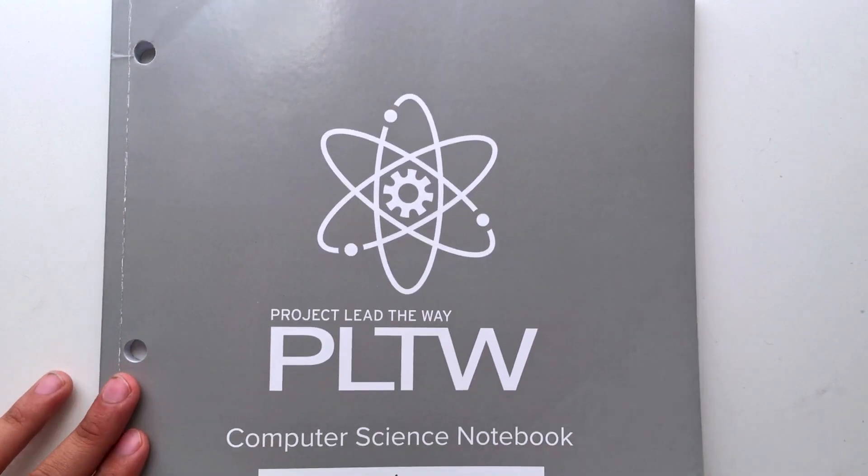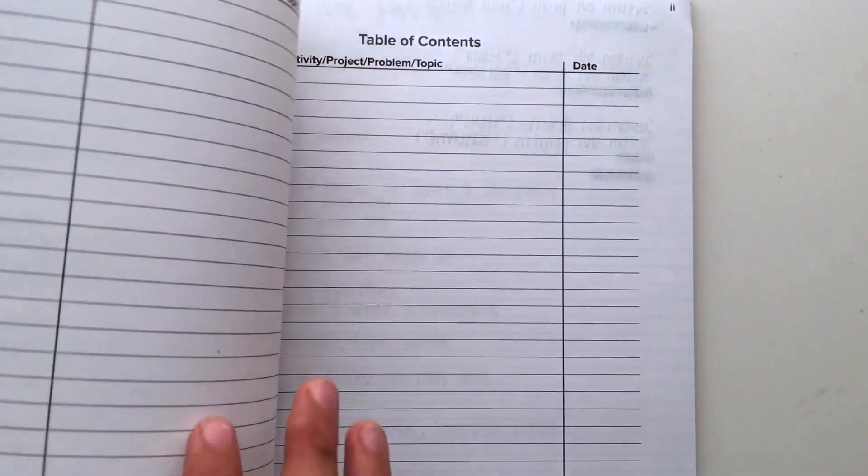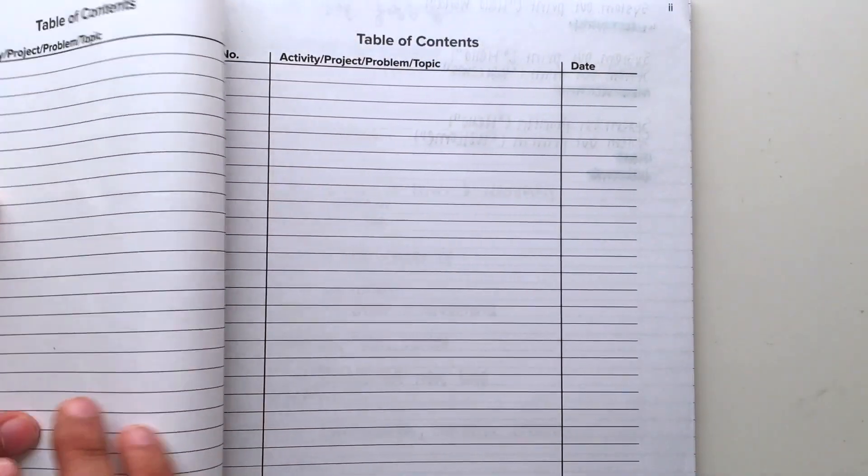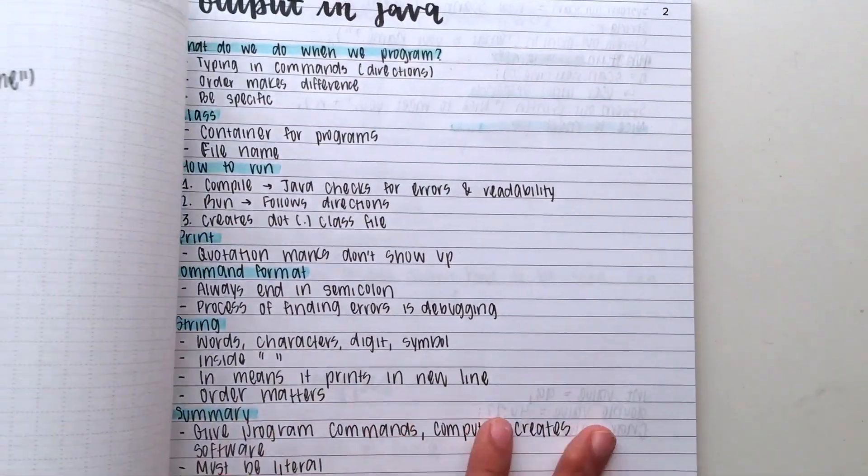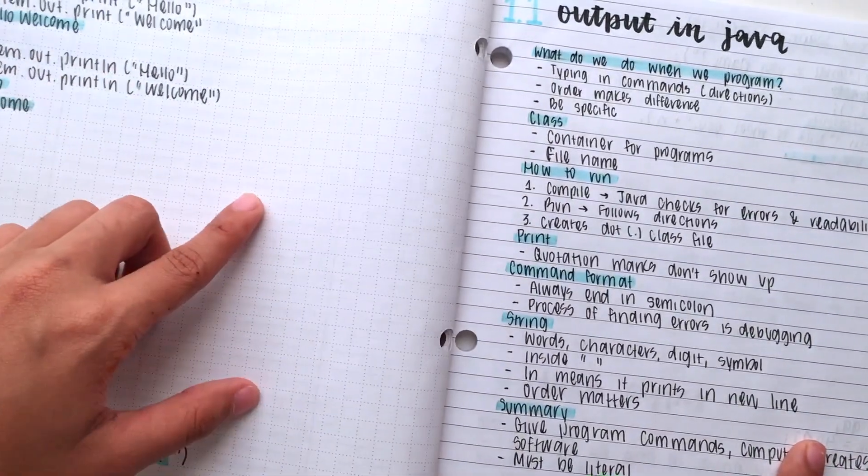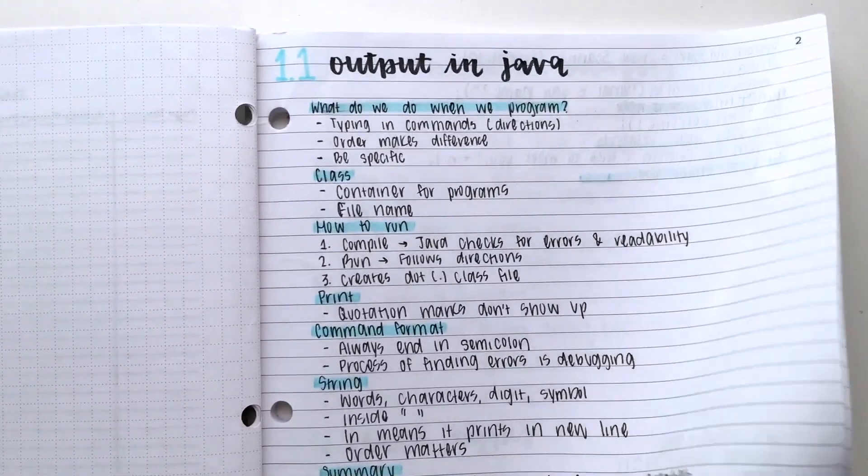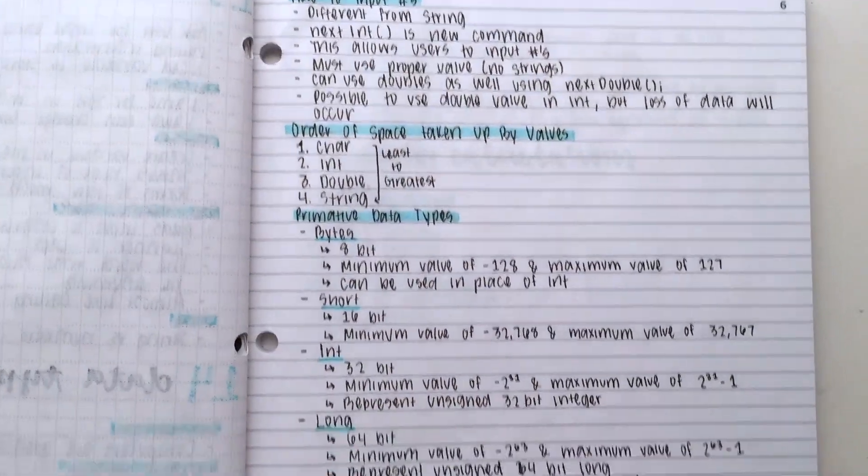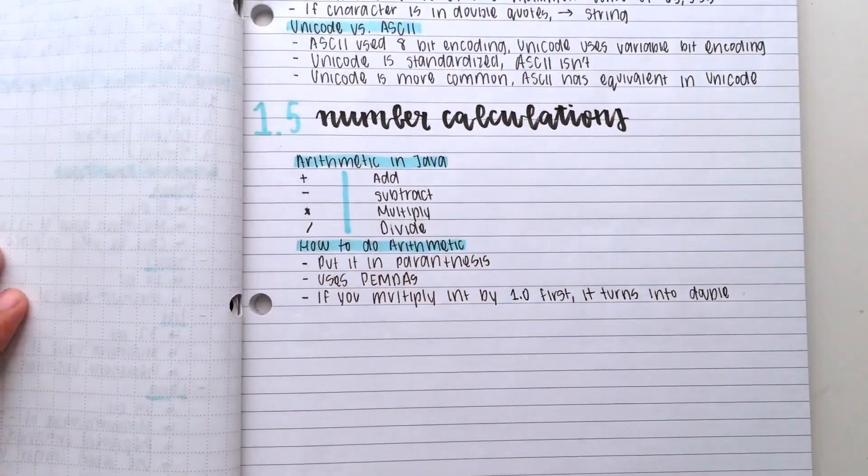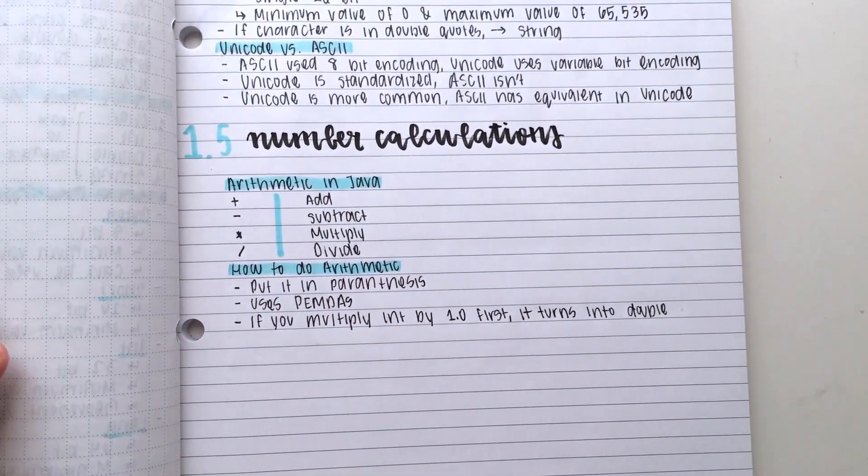Basically, they gave us a notebook already, so I'm just going to be using that in this video. As you can see, it has a table of contents already, and grid and lined paper. All the pages are numbered as well, which I find really cool.